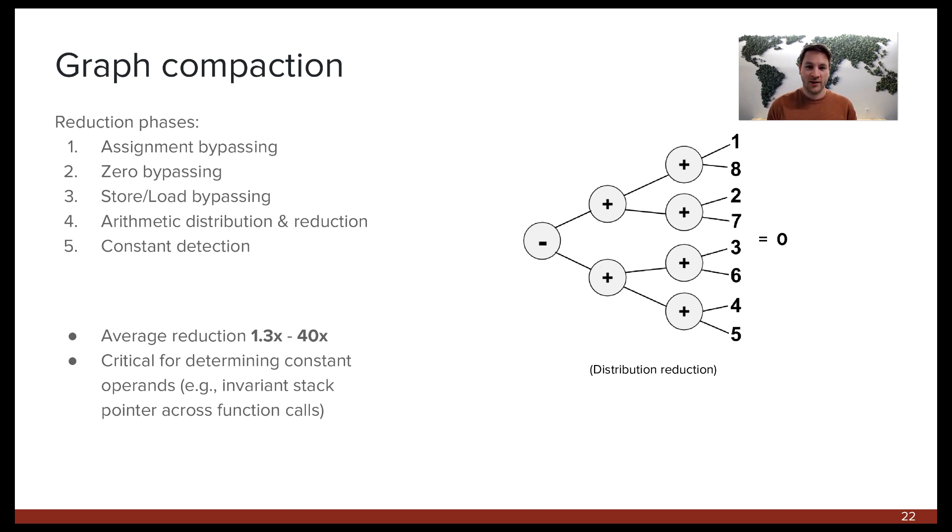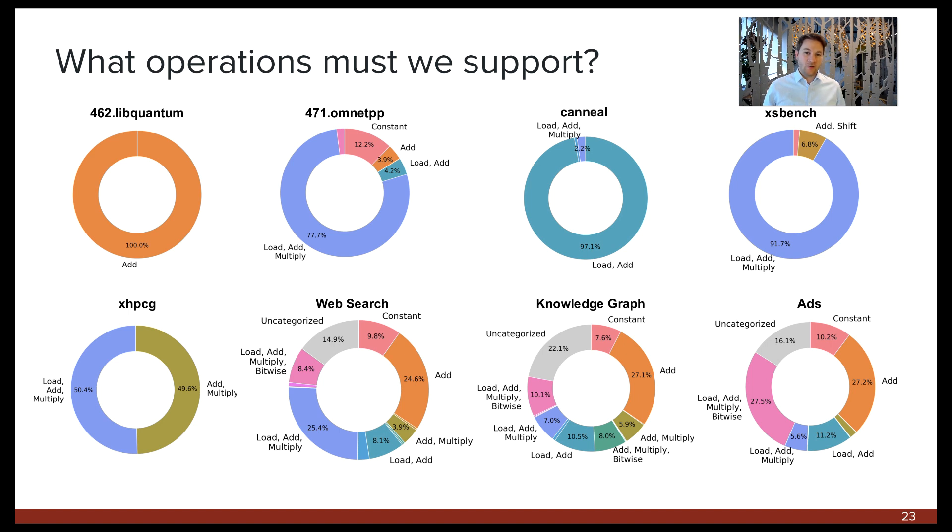We analyzed eight workloads, which we found to represent a wide range of memory pattern complexity. LibQuantum and OmniPP are from SpecCPU 2006. CNIL is from Parsec. Then we have XSBench, XHPCG, and three warehouse scale workloads from Google: WebSearch, Knowledge Graph, and an Ads backend. These plots show the types of computations that are required to directly compute a given percentage of misses in each workload. For example, LibQuantum on the top left only requires addition to compute memory addresses, and this makes sense for a stride-based access pattern like we saw in our prior analysis. In other words, a prefetcher with only a simple adder would be sufficient for LibQuantum.